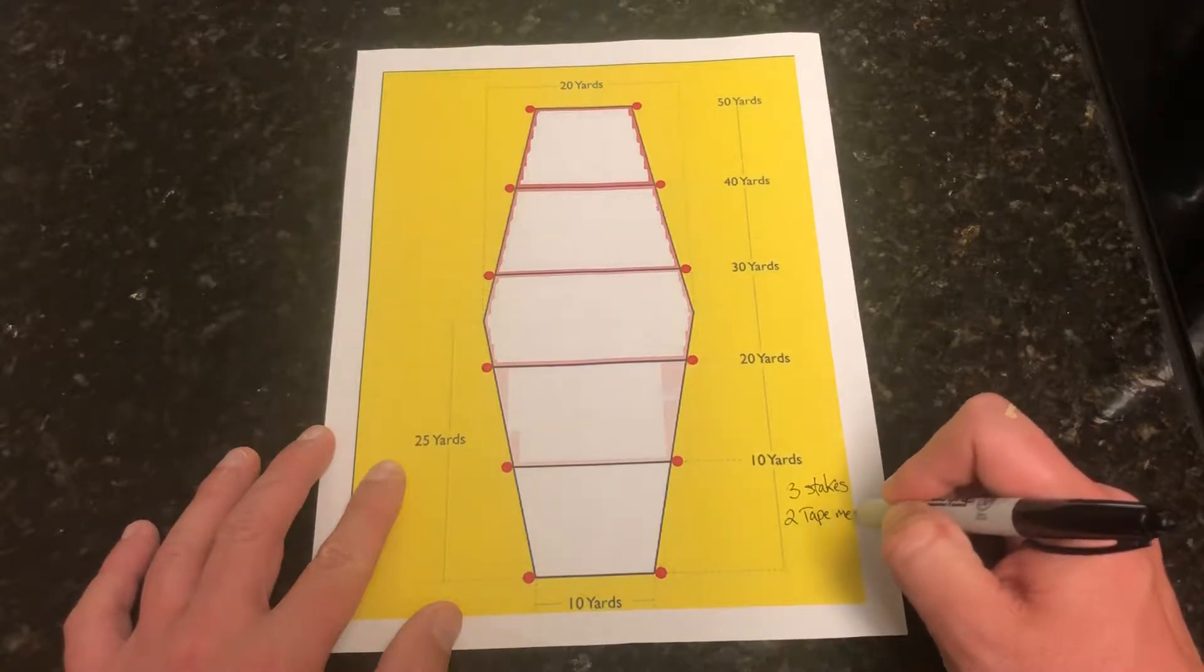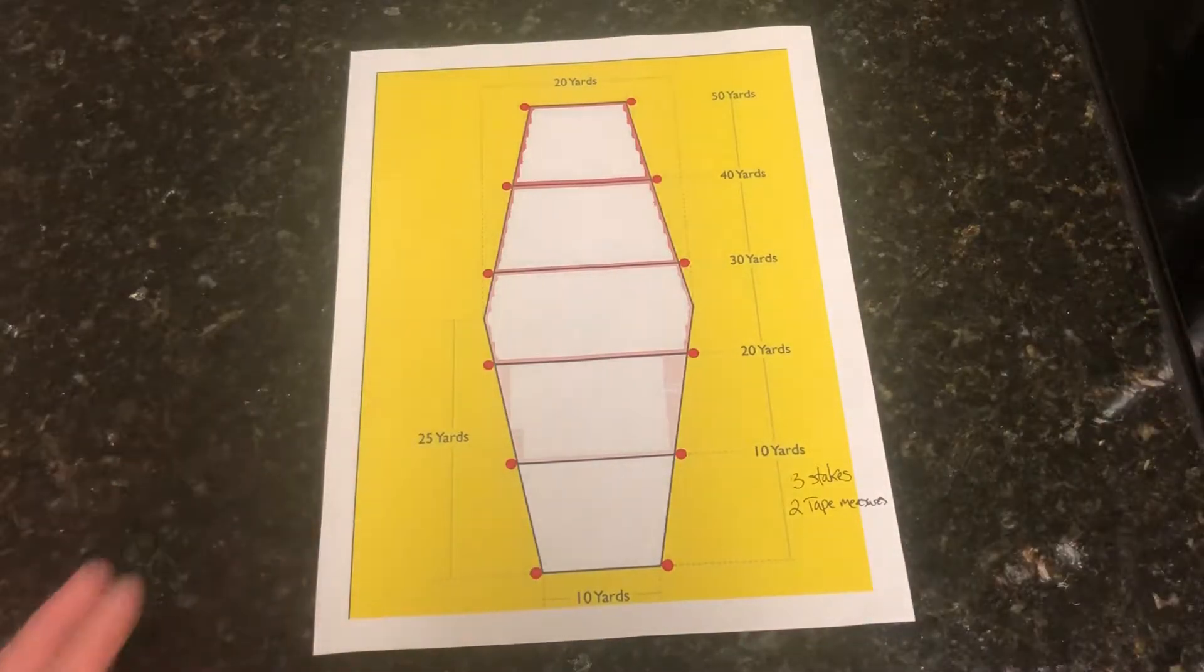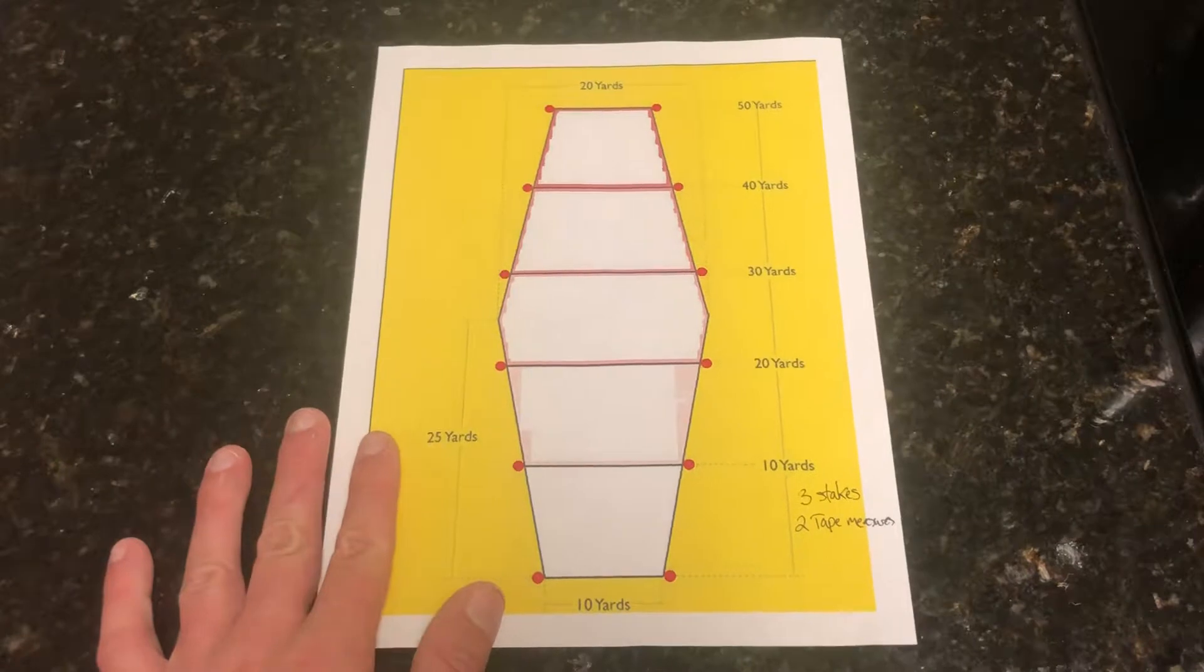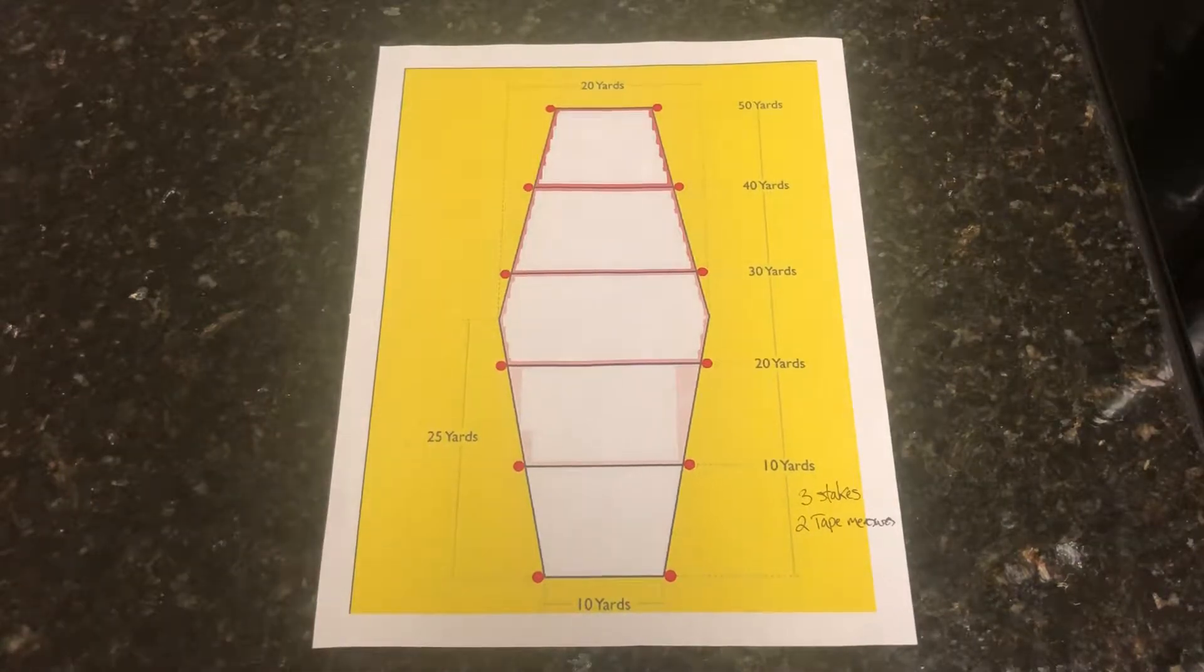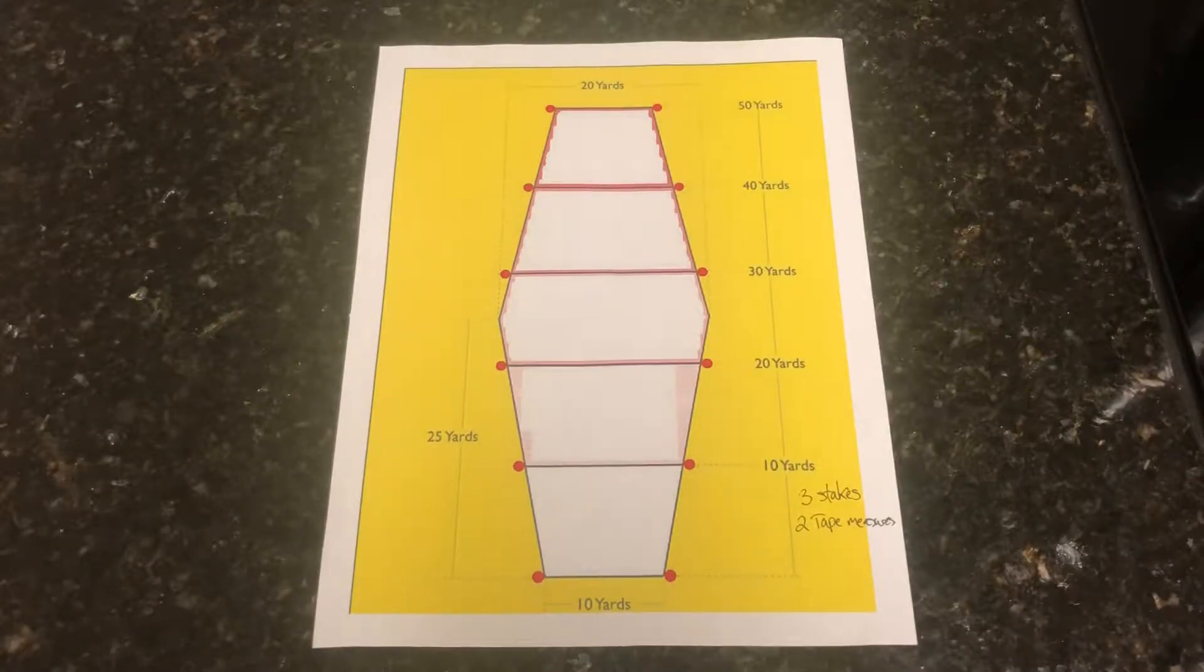The second thing you need is two tape measures. Preferably they will be at least 100 feet long, and you can get those on Amazon for 10 or 12 bucks apiece. Once you get them, you can kind of hold on to them forever, so good thing to have if you're going to engage in the sport of disc and set up competitions.